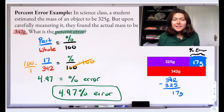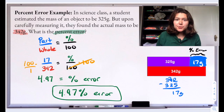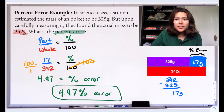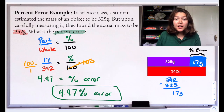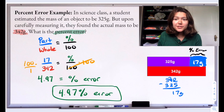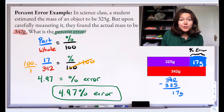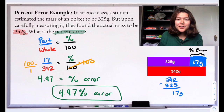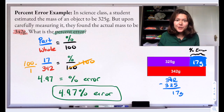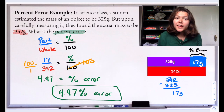That percent error tells us relatively how far off our estimate is from the actual value — and it matters more than just the amount of error. For example, if there are 342 jelly beans in a jar and you guess 325, people would say that's a pretty good guess — you were only 17 off, or about 5% off. But if there were only 3 jelly beans and you said 20, that would be a huge percent error even though it's the same 17-unit difference. So it's really the percent error that means more in the world and is more important than just the raw amount of error.